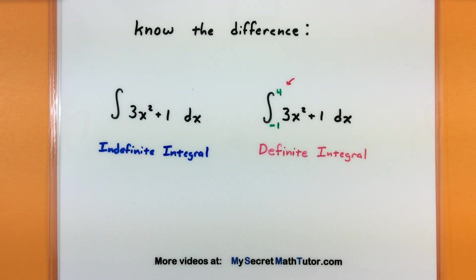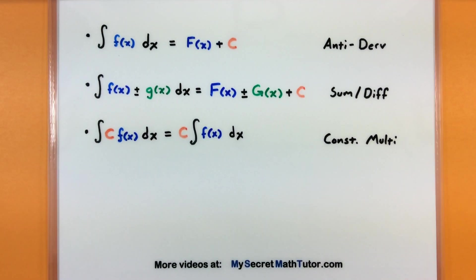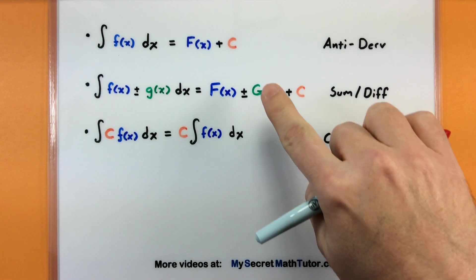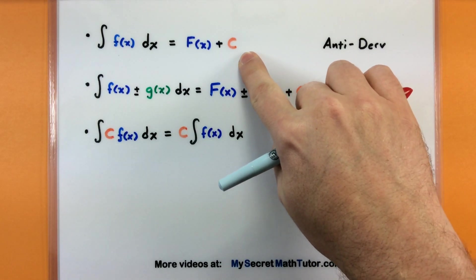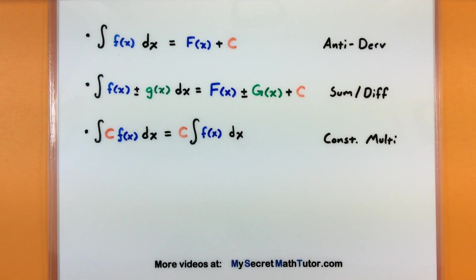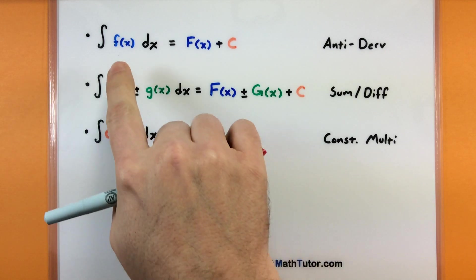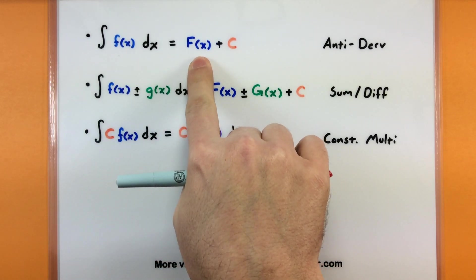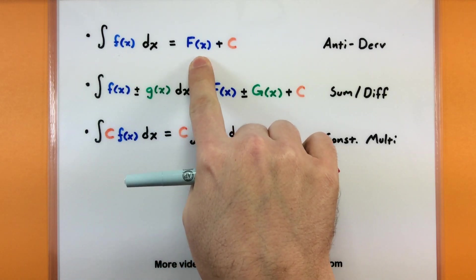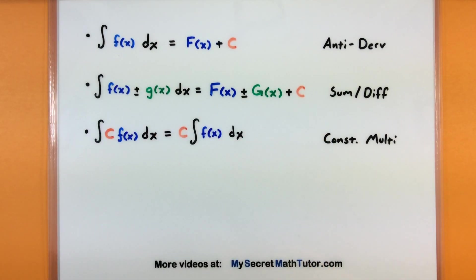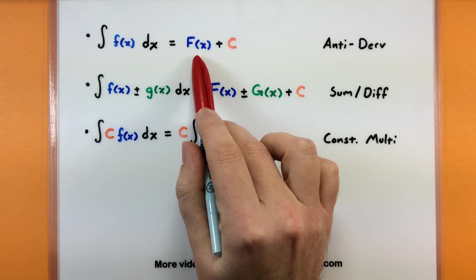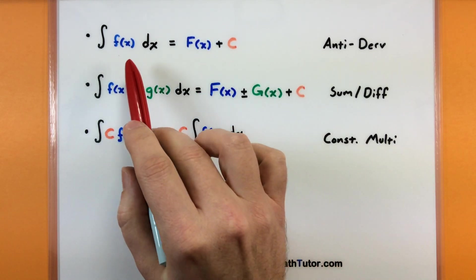When it comes to indefinite integrals, the good news is there are only a few simple rules to keep in mind. The biggest rule is that with indefinite integrals you're really thinking of an anti-derivative. You're trying to work backwards to figure out: if I were to take the derivative of this function, what would I get? You'll often see notation for an anti-derivative using a capital letter.